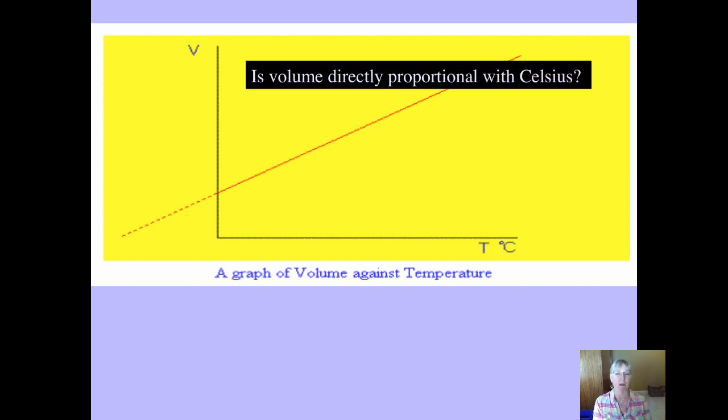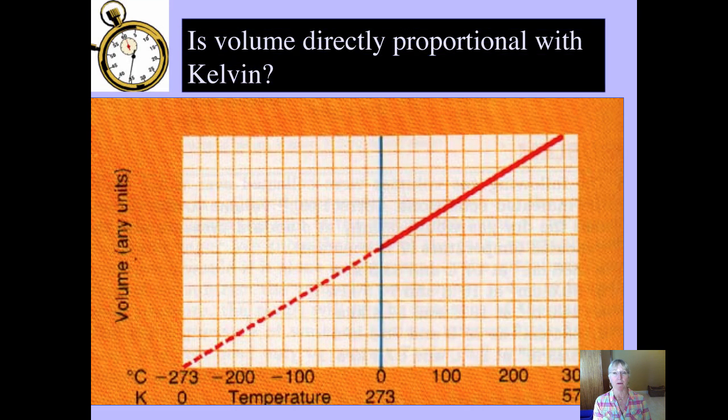Now I don't necessarily agree with this graph because if you graph temperature and volume in degrees Celsius, mathematically technically that's not a direct proportion. I guess it has something to do with the fact that your line is not intersecting at the origin. If however you show the graph when you change it into Kelvin, which by the way this graph is showing absolute zero is at 273 degrees below zero on the Celsius scale, and we call that zero Kelvin. Is volume directly proportional with the Kelvin temperature? Apparently yes because that line with a positive slope will intersect at zero at the origin.